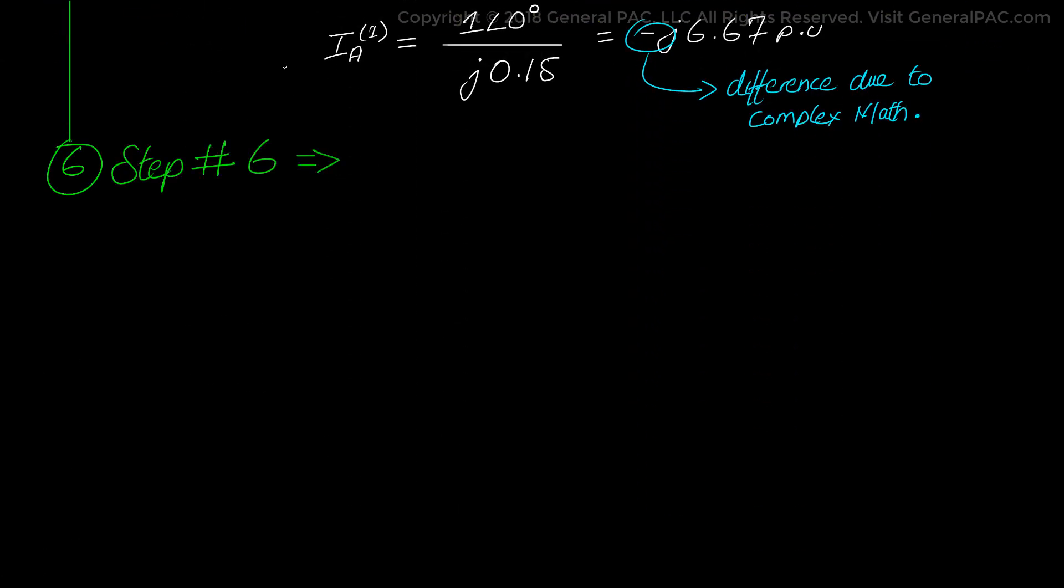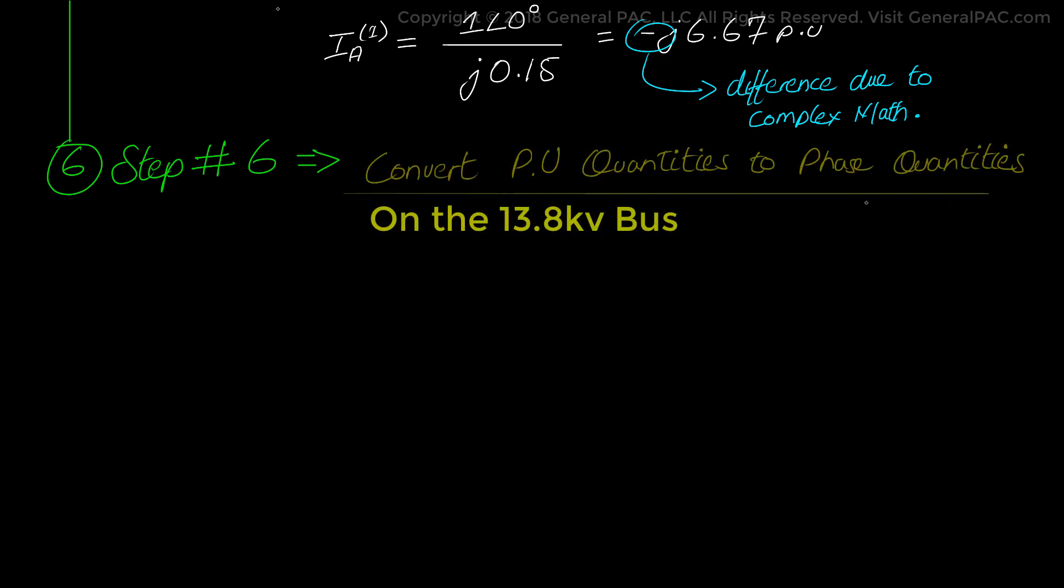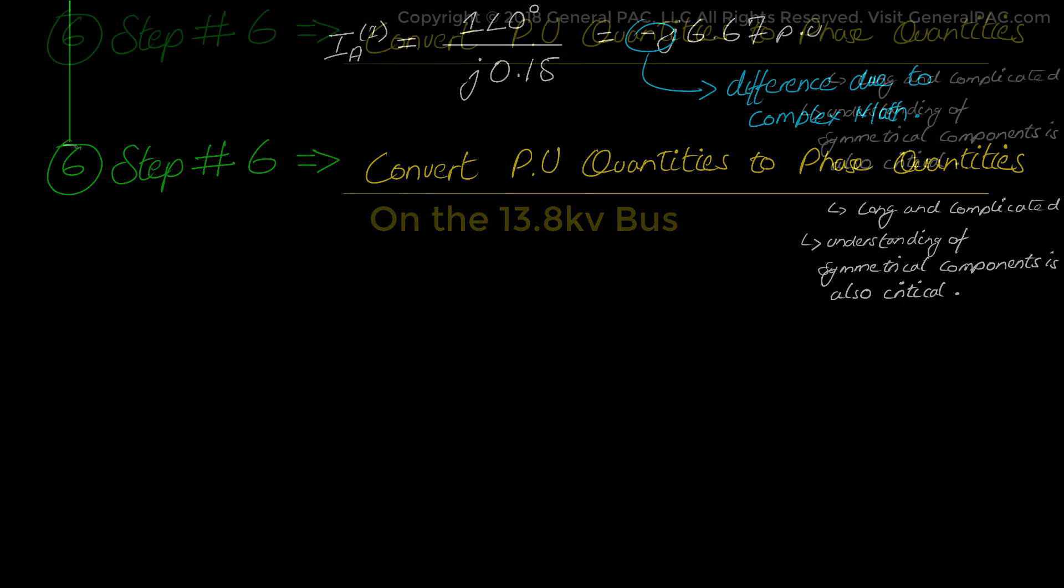Now in step number 6 we will calculate the 3 phase current and voltage values. Meaning we need to convert the per unit quantities to phase quantities. This step is going to be long and complicated. So understanding the fundamentals of symmetrical components, there's a link in the description section below, is really critical. So let's continue here.